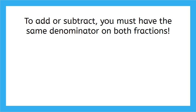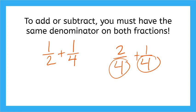For example, if you had the fractions one-half plus one-fourth, your denominators are two and four—you cannot combine those. But if we had two-fourths plus one-fourth, the denominators are the same, so we can add those.